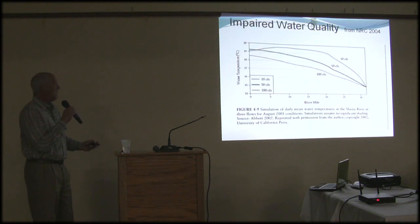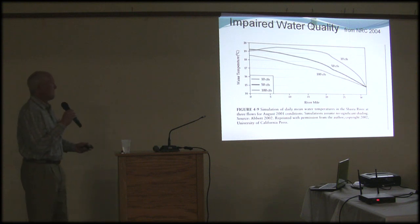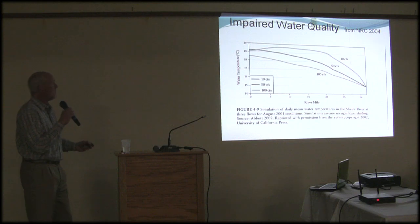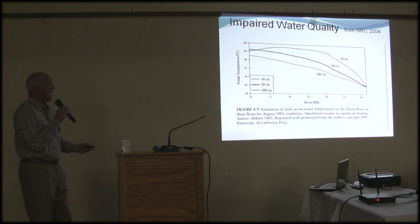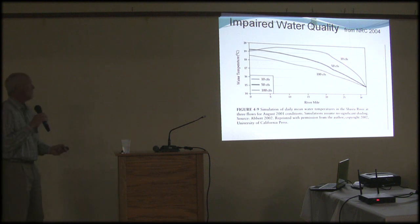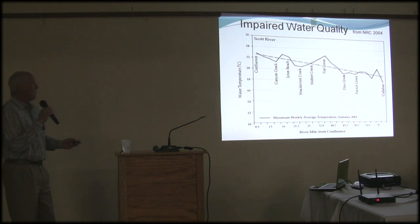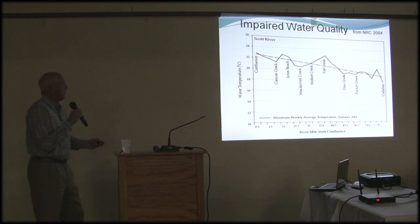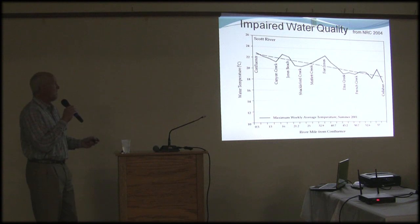In terms of impaired water quality, here we see a simulation in the Shasta River showing the effects of three different flow levels on temperature as we move from the source to the mouth. Of particular note is the steep increase in temperature proximal to the source when flows are as low as 10 CFS. On the Scott River, we see an irregular relationship between temperature and distance, reflecting groundwater intrusion from key tributaries and temperature increases where groundwater is not influencing.